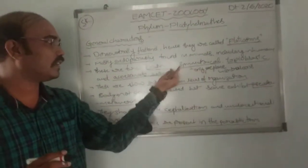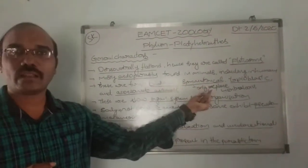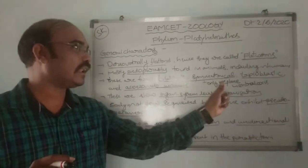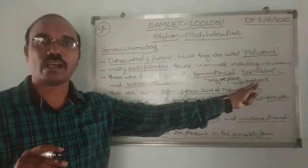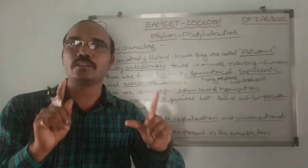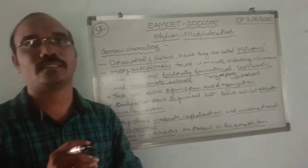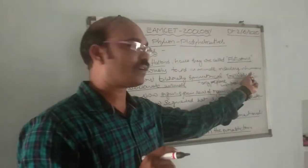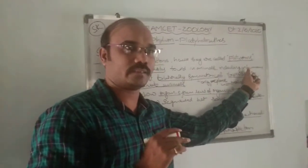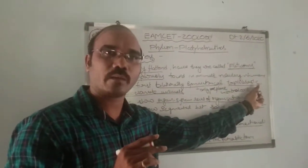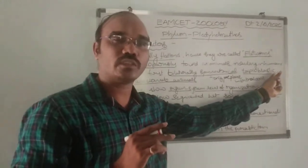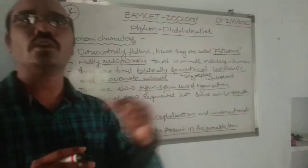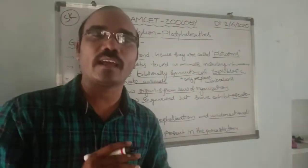Bilaterally symmetrical means when only one plane passed through the central axis of an organism divides it into two identical or equal parts — that is called bilaterally symmetrical. The organism contains three germinal layers: ectoderm, endoderm, and mesoderm. This organism shows organ system level of organization.